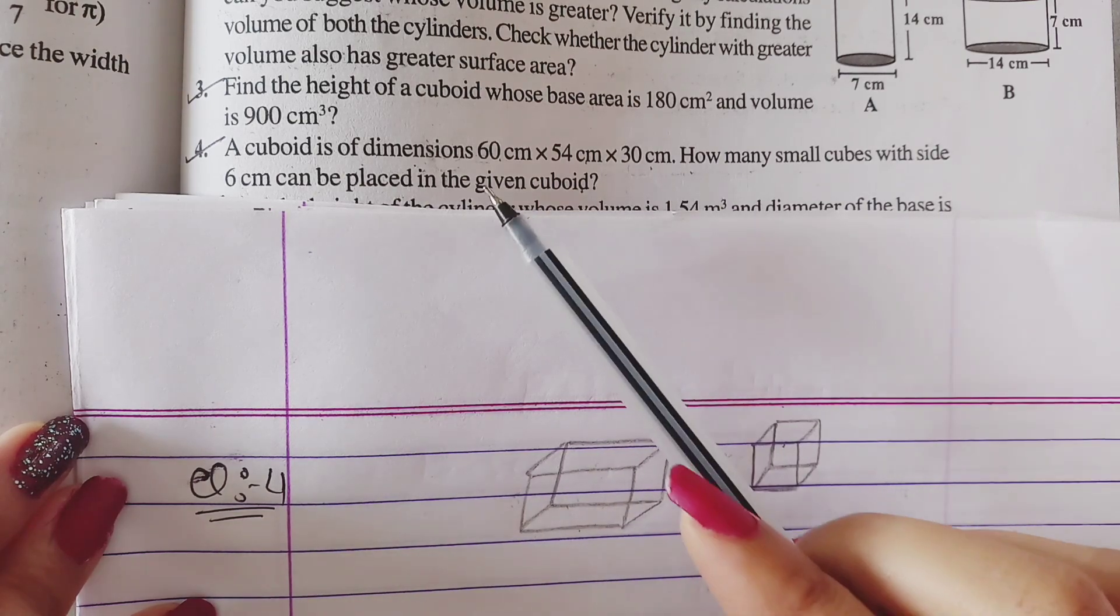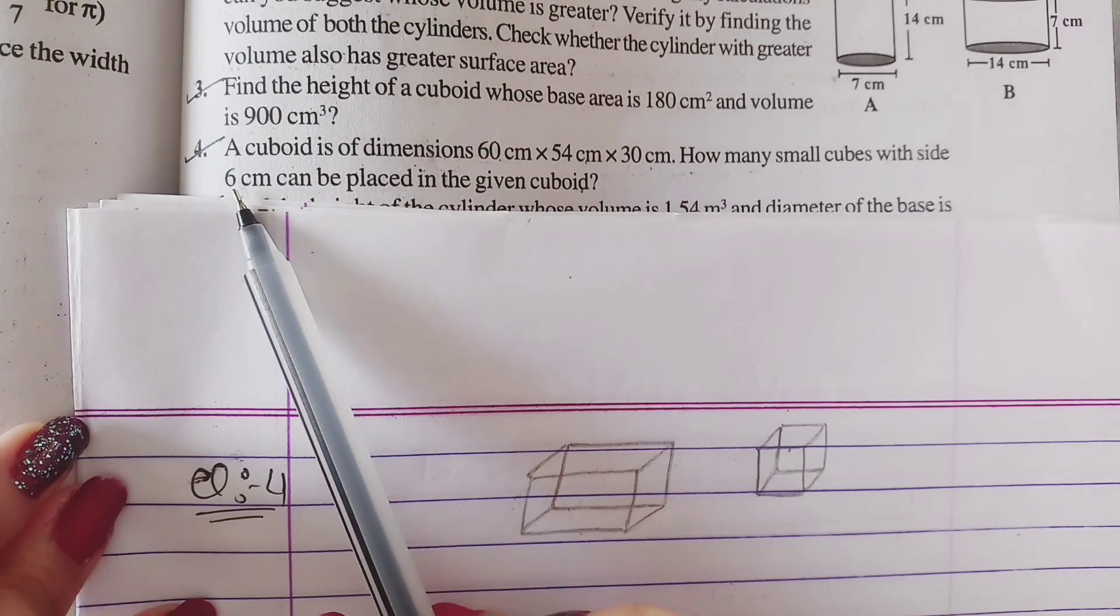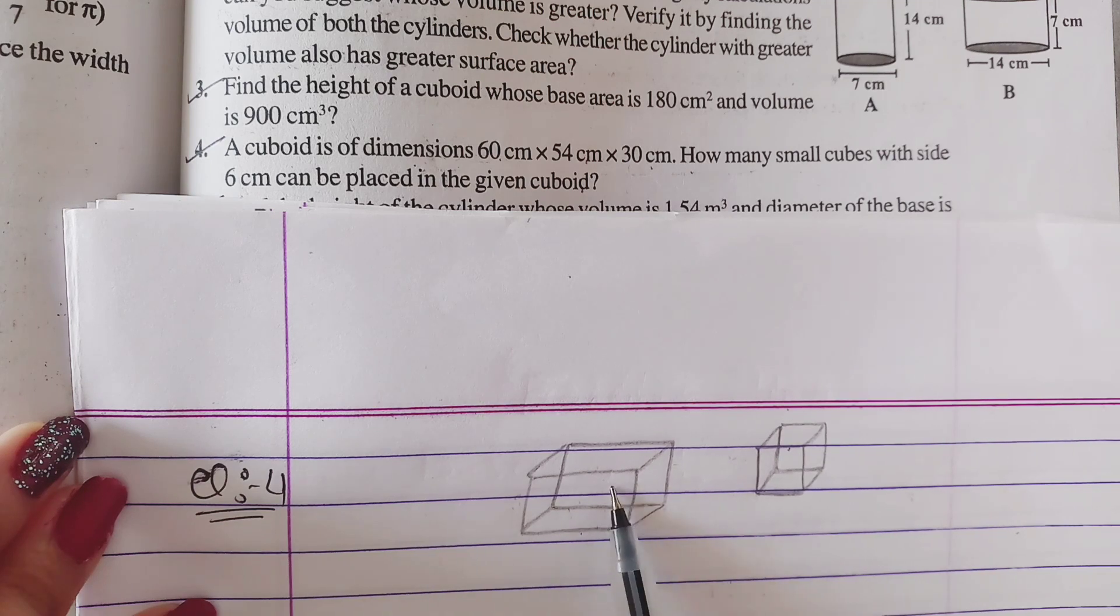Cuboid measurements are 60, 54, and 30 cm. The cube measurement is 6 cm. So we will place these small boxes here.